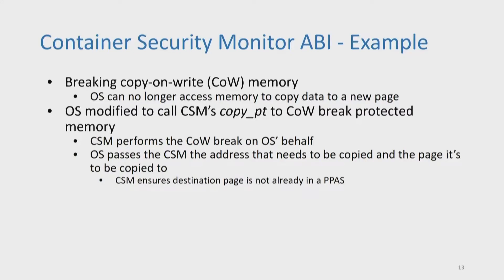With this call, the OS passes the address that needs to be copied and where it is to be copied to. The CSM verifies that the destination page doesn't already belong to a protected physical address space, then moves it into the container's protected address space and copies the contents of the source page.